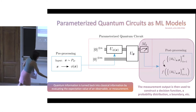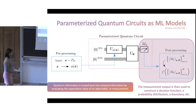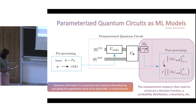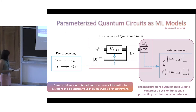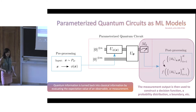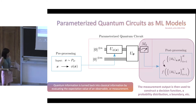The final ingredient is the measurement or post-processing step, where information about your quantum state is transferred back into the classical world. You can do this by evaluating the expectation value of an observable, then use that to construct a function for your particular task — a decision function, probability distribution, or a classification boundary for your application.